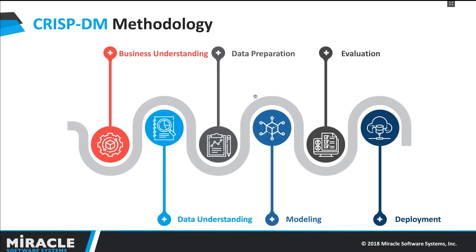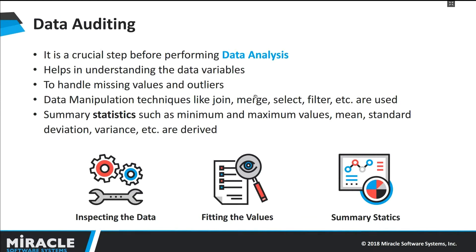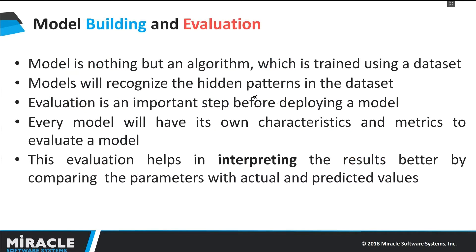The data auditing phase is equivalent to the data preparation phase discussed earlier. Data auditing is an important stage in the machine learning process as it overcomes all the flaws in our data and provides a high quality data set for better accuracy and predictions. We can audit the data for missing values and outliers, and overcome them using operations like join, merge, and others. We can also have an overview of the whole data set by performing summary statistics. After data auditing, we will have a high quality data set ready for model building. We will train the data set using different models and evaluate them based on characteristics like accuracy, probability value, confusion matrix, RMSE, and error rate.